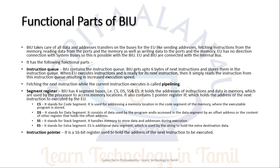The 8086 instruction queue can hold up to 6 bytes of instructions, so the next instruction is ready to execute. This gives the 8086 better processing efficiency than the 8085. The segment registers consist of 4 segment registers: CS, DS, SS, and ES. These are 16-bit registers.